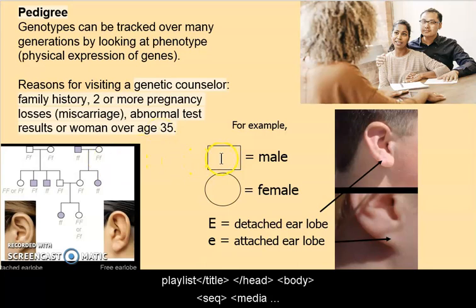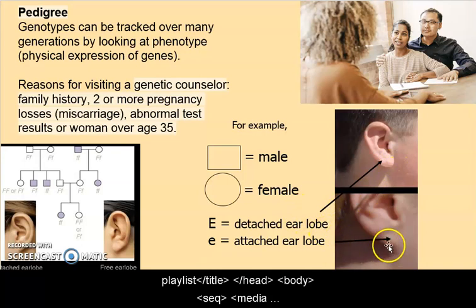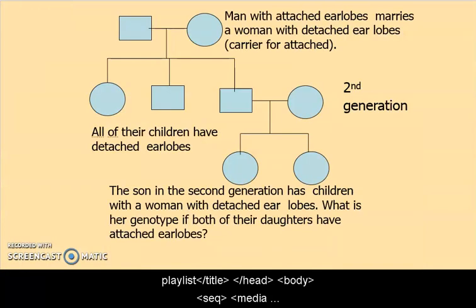In pedigrees we use boxes to represent males and circles to represent females. A capital letter indicates a dominant gene. For example, a detached earlobe — where the lobe hangs down — is dominant. You might think, who cares about earlobes? But if we understand earlobes we can understand things like hemophilia. Dominant versus recessive doesn't matter much here unless you're planning to hang a lot of jewelry.